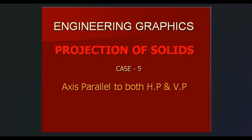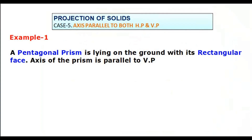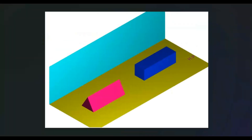In this video, we are going to discuss projection of solids with the condition axis parallel to both the principal planes, that is horizontal plane and vertical plane. As the best example, a pentagonal prism is lying on the ground with its rectangular face, and the axis of the prism is parallel to VP. Since the prism is lying on the ground, its axis is parallel to HP, so in this case the axis is parallel to both the principal planes.